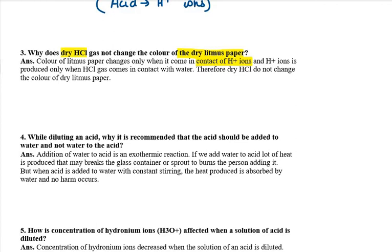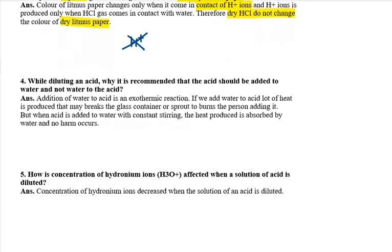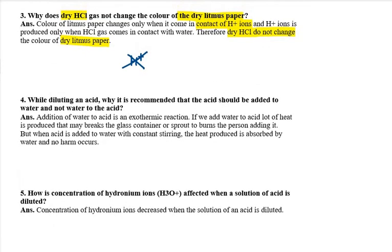Because of this, dry HCl will never show a different color on litmus paper. Why won't it? Because it does not form H+ ions. If H+ ions are not formed, there will be no color change, because the litmus paper needs H+ ions to come into contact with the compound. Since it is dry, that contact cannot happen. Moving on to question number 4.